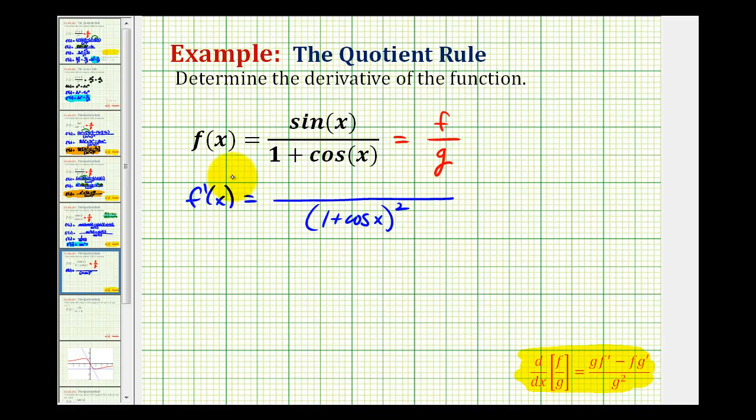Our numerator is going to be g times f prime minus f times g prime. So for g times f prime, we'll have the denominator, one plus cosine x, times the derivative of the numerator, derivative of sine x is cosine x,